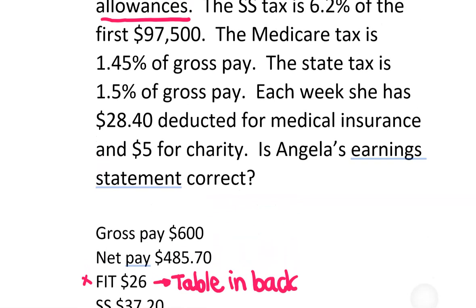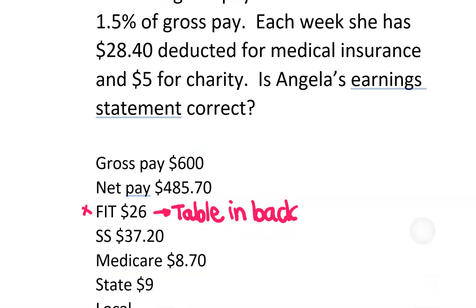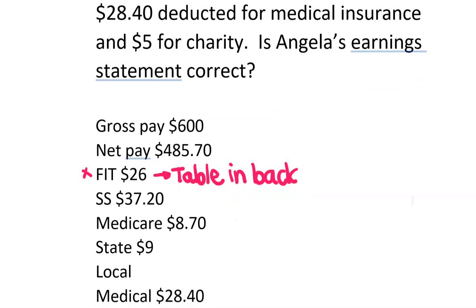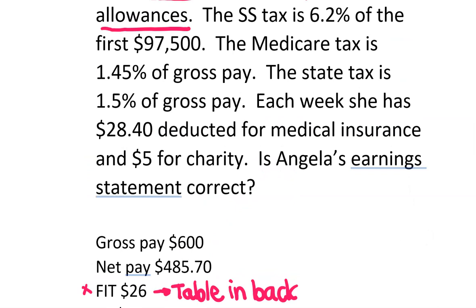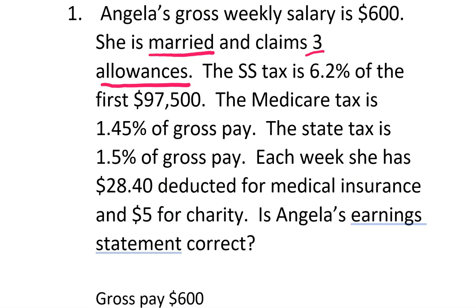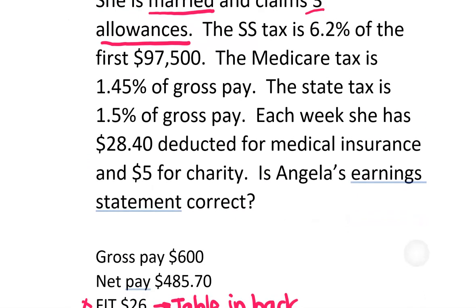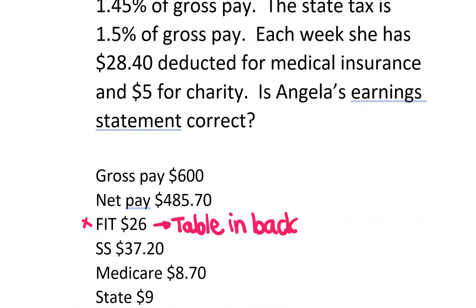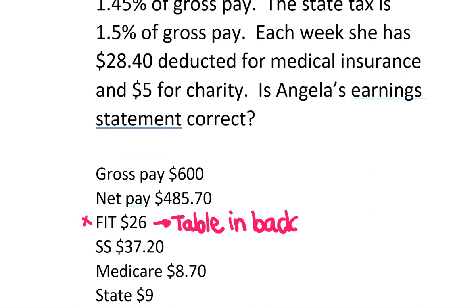The next one: Social Security is 6.2%. When you're looking at this one, it doesn't really say how much she has made this year. So if it doesn't, you assume that you need to figure that out. So you're going to take 600 times 6.2%. If you multiply that out, you do get $37.20. So that one checks out as well.